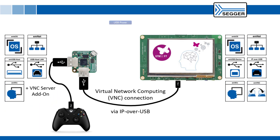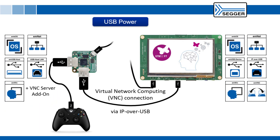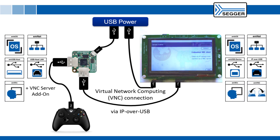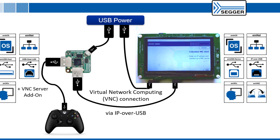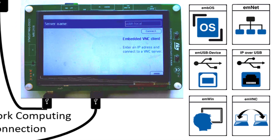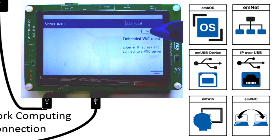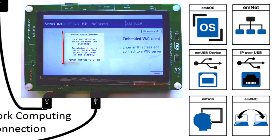After the two boards are programmed with the demo software and powered up, a button appears close to the top right corner of the display. By touching the button, the two boards establish the IP connection.